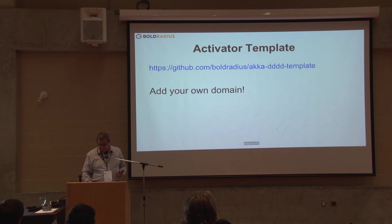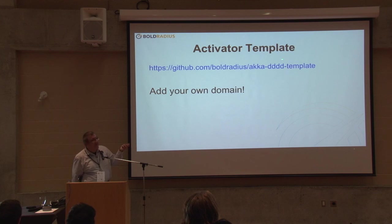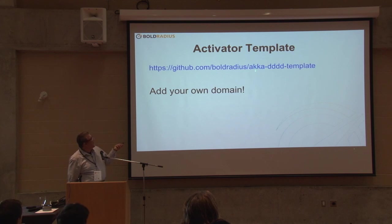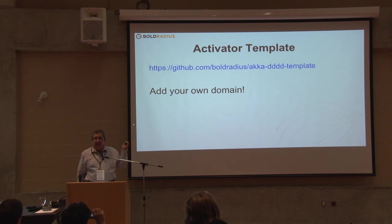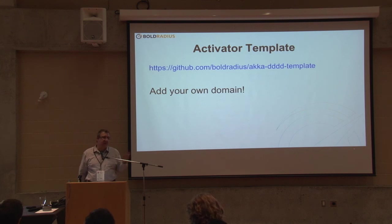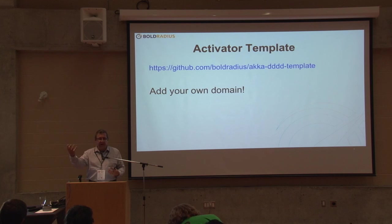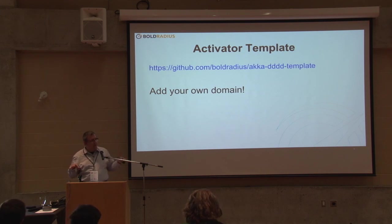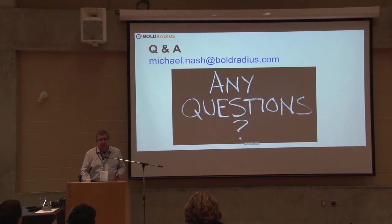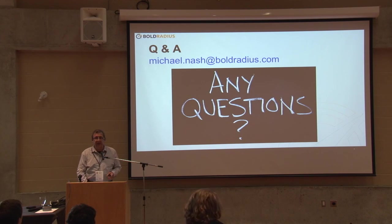Here's the Activator template — I'll have these slides available afterwards. Try plugging in your own domain. Try changing the object we're actually doing this on — in this case it's the auction. We're not distributing users, just one domain instance: the auctions. Try doing this with your own domain and see if you can figure out how to separate your read and write operations so they're two separate things. Any questions?